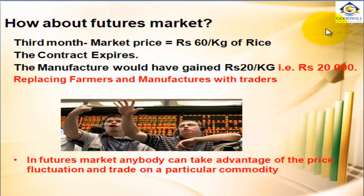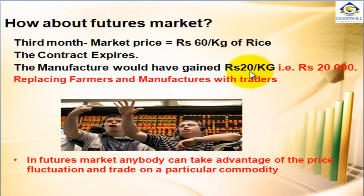Now let us see what happened in the third month, because the contract will expire in the third month. The market price is the same Rs 60 per kg and the contract expires. The manufacturer would have gained Rs 20 per kg, that is Rs 20,000 for 1000 kg.